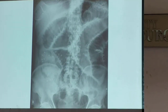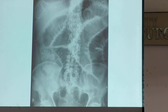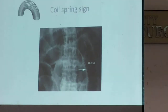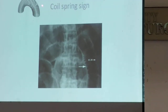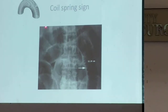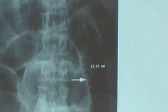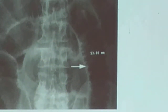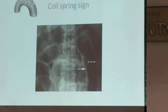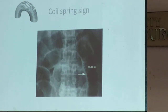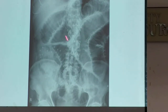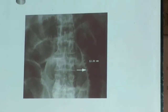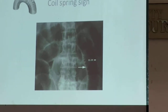The valvulae conniventes are very prominent. That is the coil spring sign — named after the toy that comes in different colors. So remember these two signs: the step ladder sign and the coil spring sign.